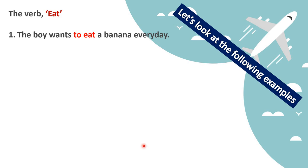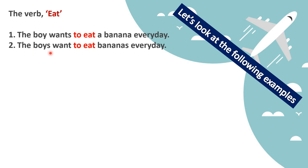'The boy wants to eat' - 'to eat' is not coming immediately after the subject, so it is different from a finite verb. 'The boys want to eat' - 'wants' and 'want' are finite verbs, but 'to eat' remains the same. 'I want to eat, he wants to eat, they want to eat' - 'to eat' remains unchanged everywhere and does not come immediately after the subject. It is not changing according to person.